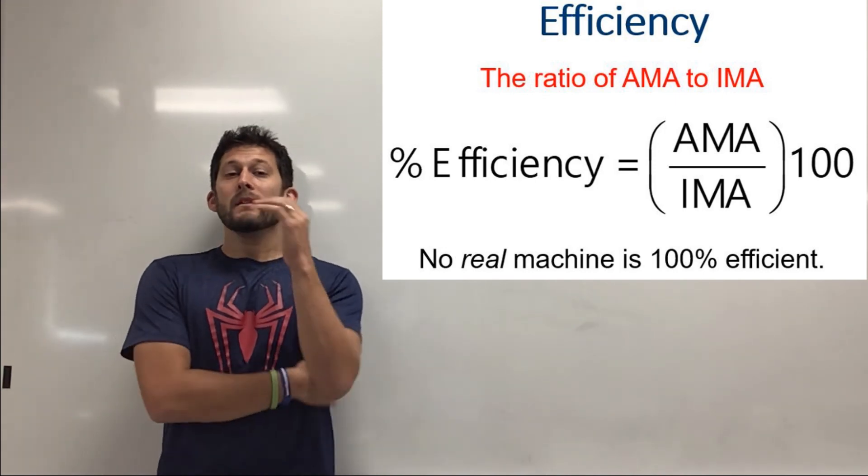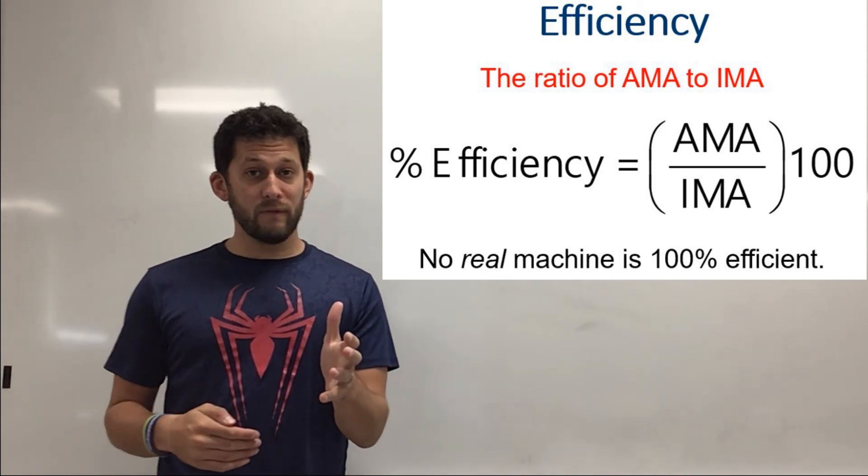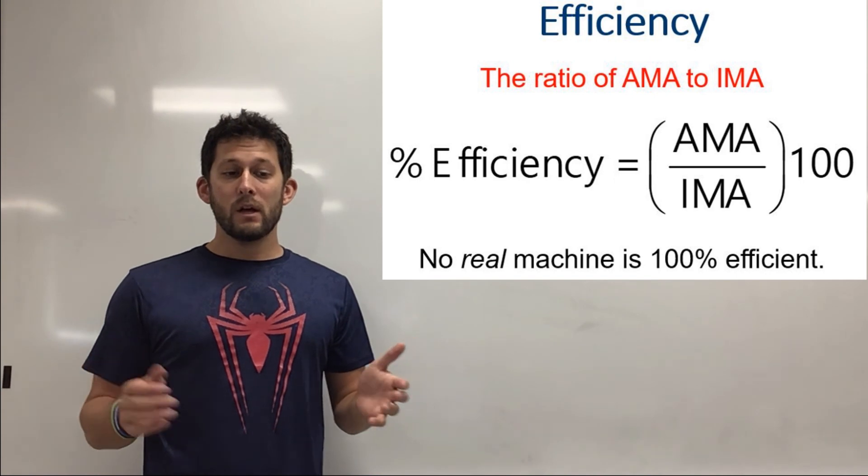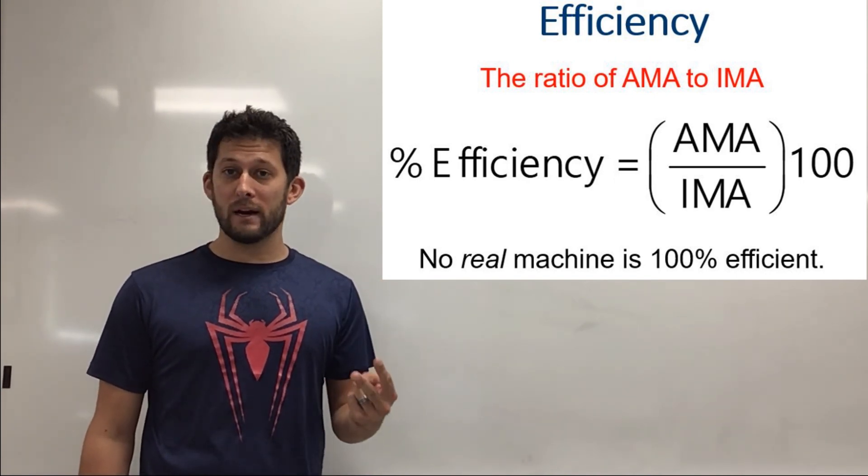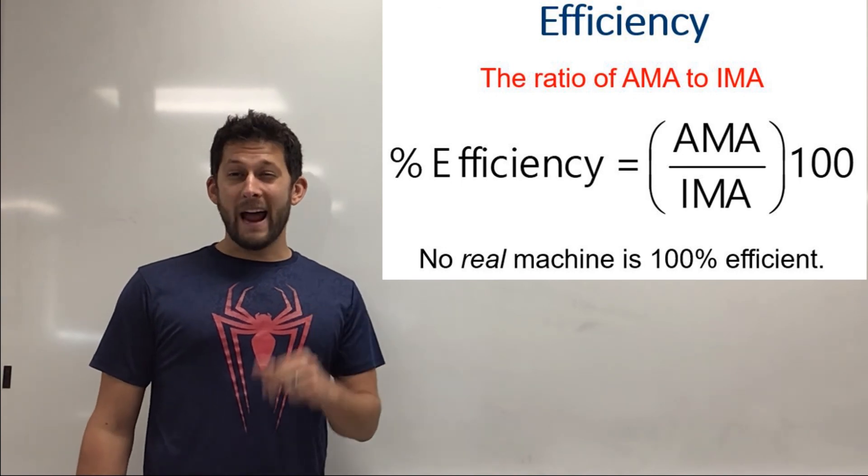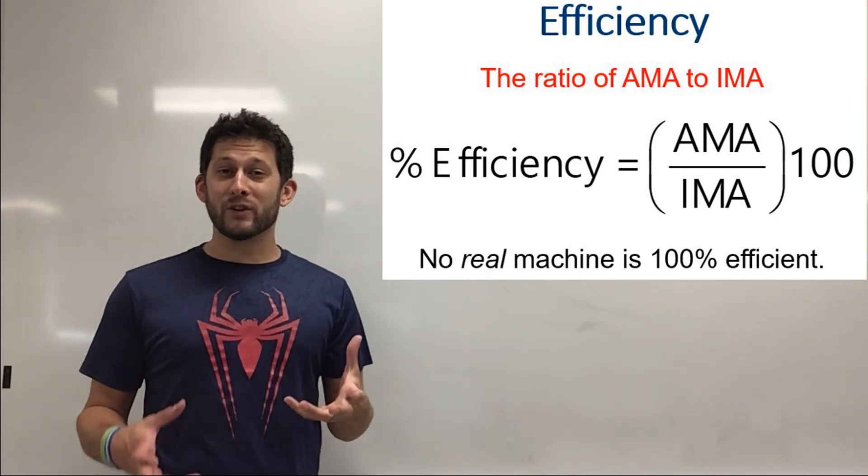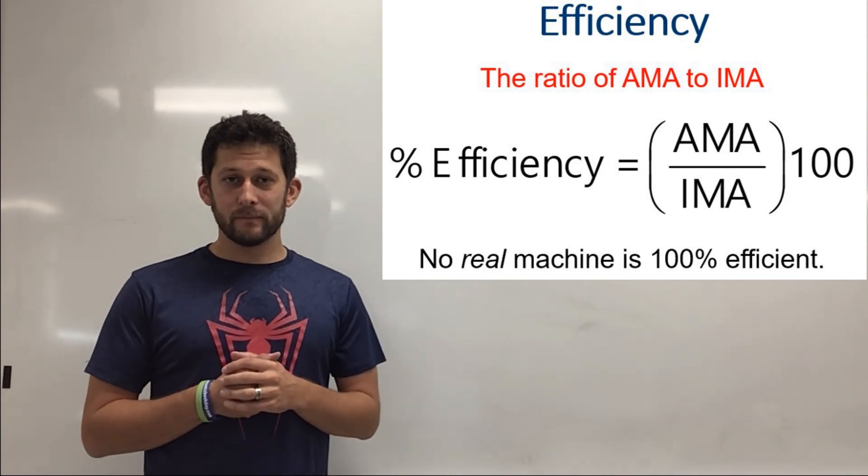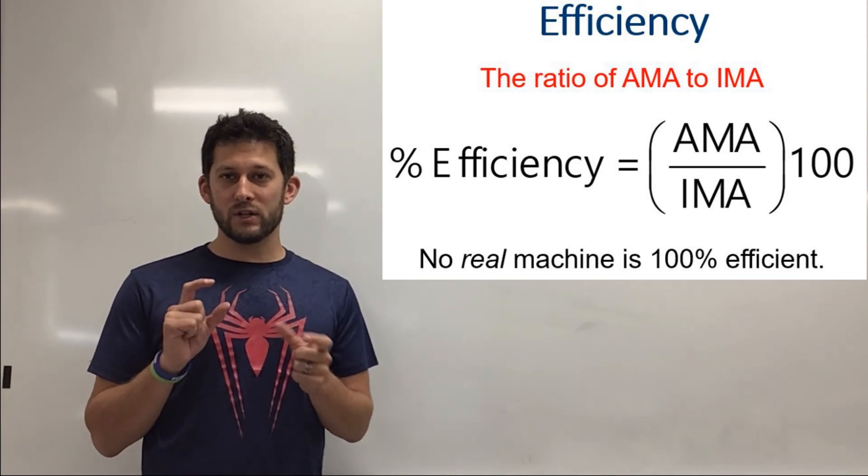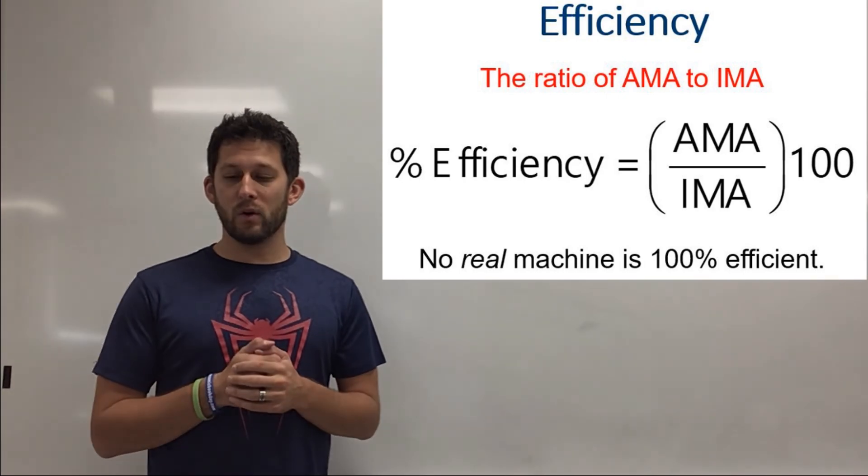Now keep in mind if there is no loss due to friction if we are in a perfectly ideal world your AMA and your IMA will be the same. That's a big clue to a lot of problems. When you're actually doing projects when you're actually measuring things that's never ever going to happen but that's a little bit of a clue to kind of jump between those two different equations.